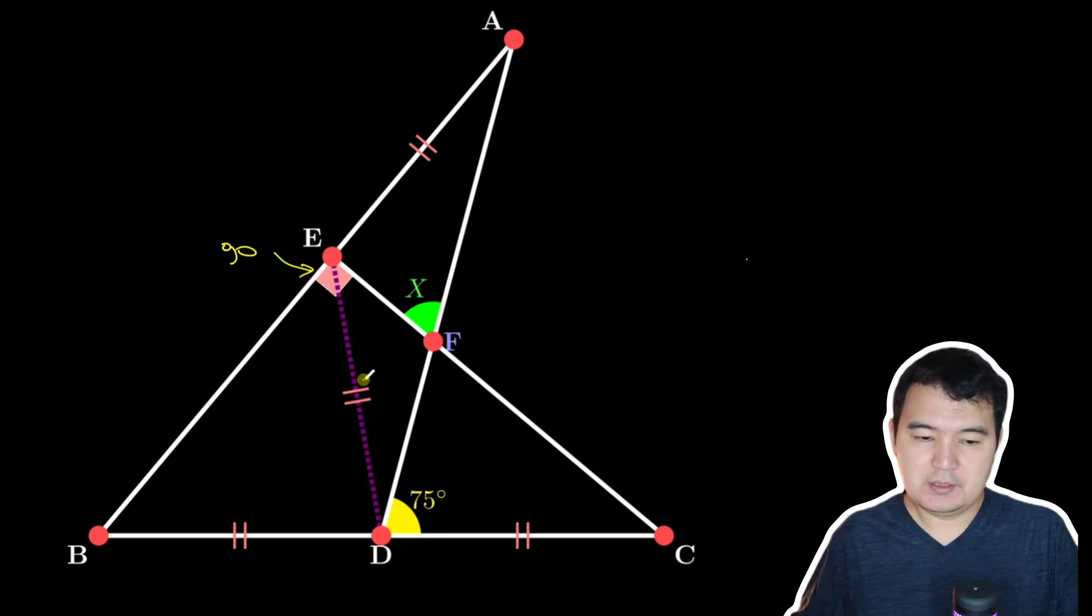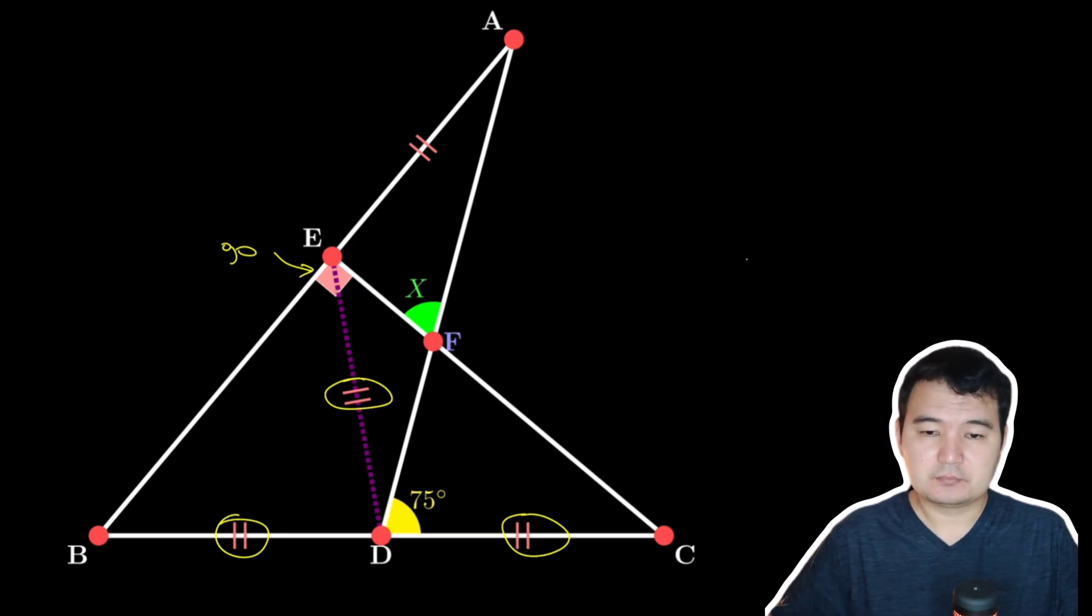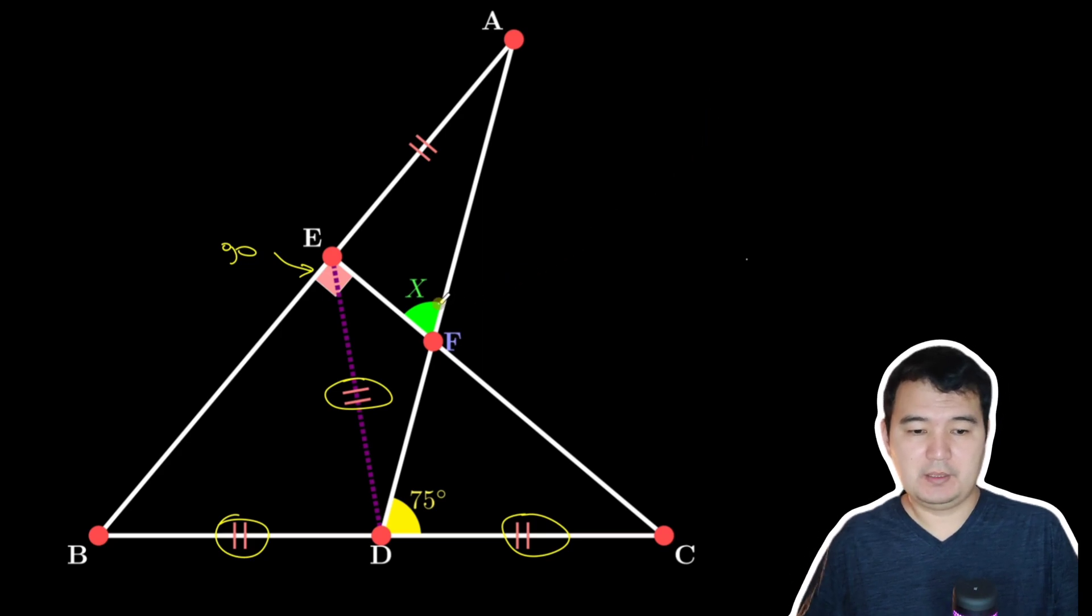ED, BD, and DC will all be equal to each other because of the right triangle. Now we can compute some angles.